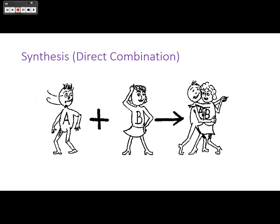A synthesis reaction or direct combination reaction occurs when two reactants, A and B, come together to make one product, AB — like two single partners coming together to make one product.